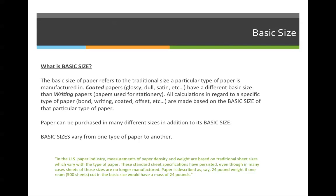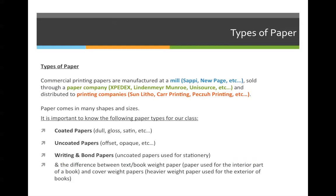You need to memorize the basic sizes of paper. We're going to identify three groups, and those three groups are the only ones you have to memorize. Paper for commercial printing companies is manufactured at a mill, sold through a paper company, and distributed to printing companies. Paper comes in many shapes and sizes, and there are probably 100 different types, sizes, textures, etc., but these are the ones you need to memorize for our class.